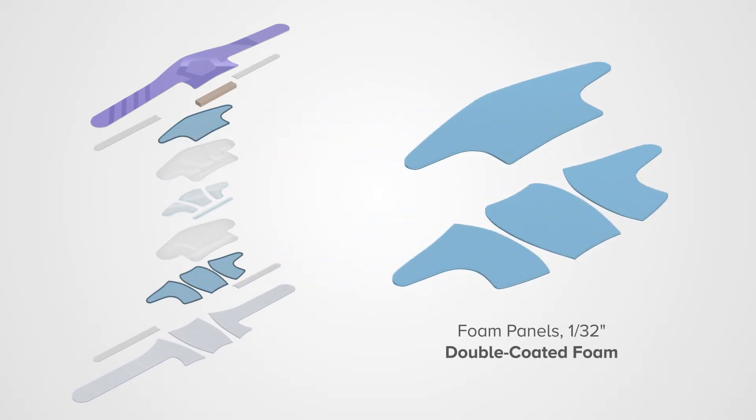Foam panels give the GelShield its curved shape, which helps to increase surface contact area while serving as additional pressure reduction layers.